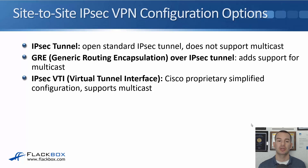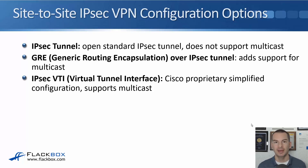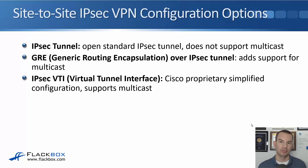The next option is IPSec VTI. VTI stands for Virtual Tunnel Interface. This is a Cisco proprietary simplified configuration which does support multicast. It's also IPSec, but it has to be between two Cisco devices. IPSec VTI came out after support for GRE over IPSec, and is very often used for site-to-site VPNs between Cisco devices.